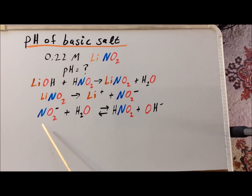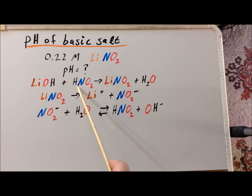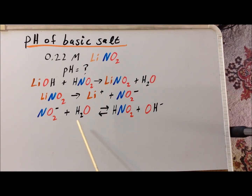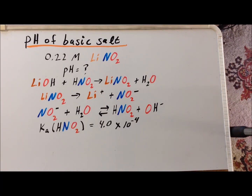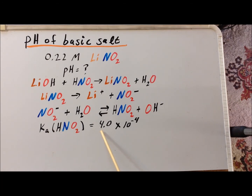We note that nitrite ion is the conjugate base of the weak acid nitrous acid, so it has weakly basic properties. It is going to interact with water to give us nitrous acid plus hydroxide ion. We can find, by looking up in a table, that the acid dissociation constant Ka of nitrous acid is equal to 4 times 10 to the minus 4.